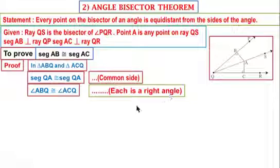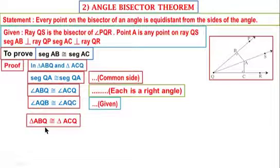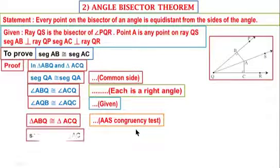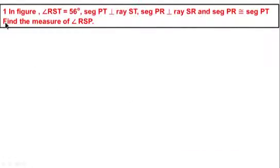Angle AQB is congruent to angle AQC — given. Therefore triangle ABQ is congruent to triangle ACQ by the AAS congruency test. Therefore segment AB is congruent to segment AC — corresponding sides of congruent triangles.